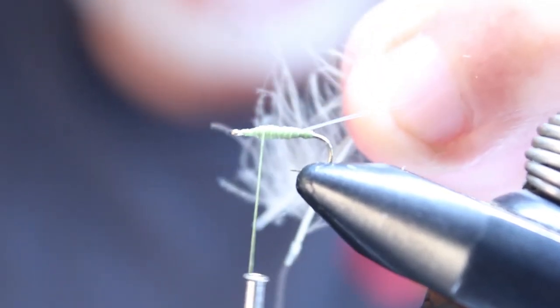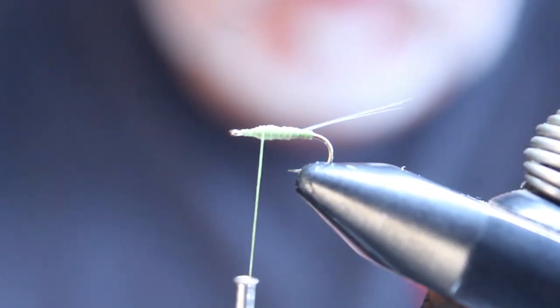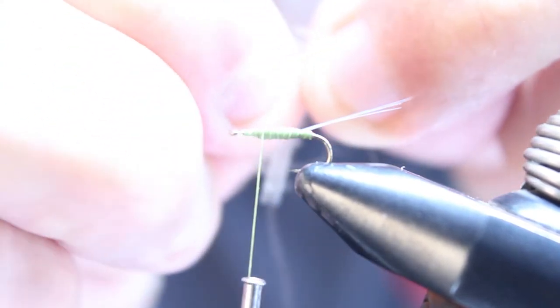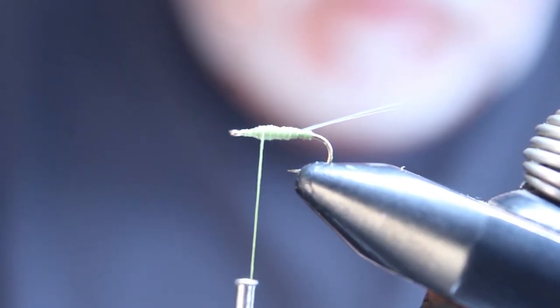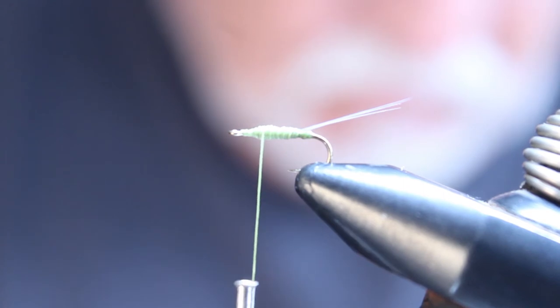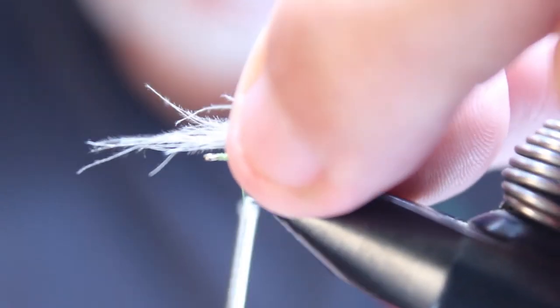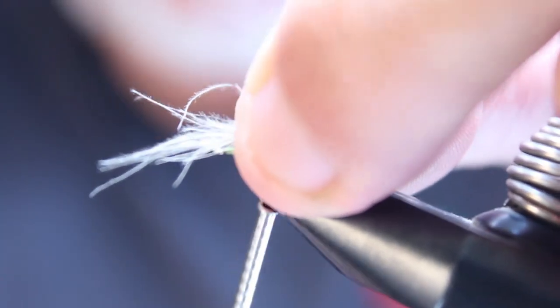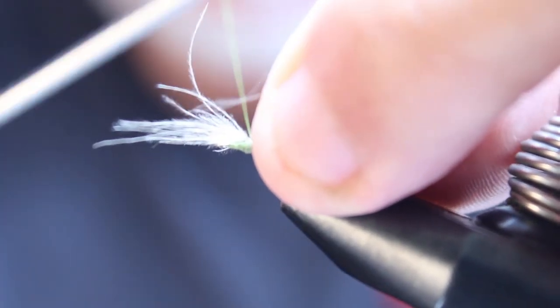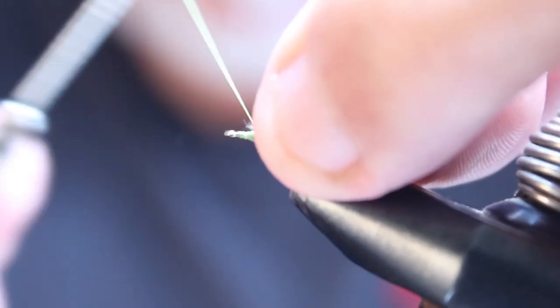Now I'm going to take a couple of feathers of CDC. Grab them, just give them a good pull. At this point I don't care if they're too even because we're going to be trimming them. Right there, let's tie them to the front.